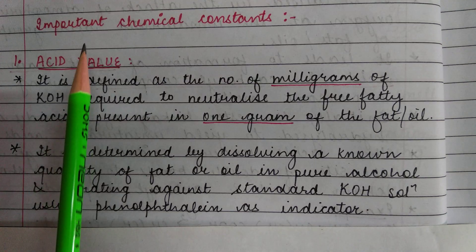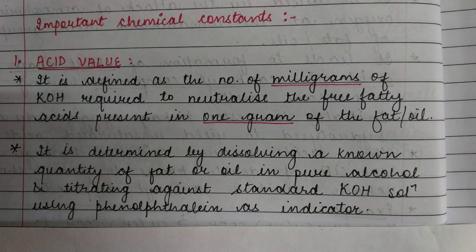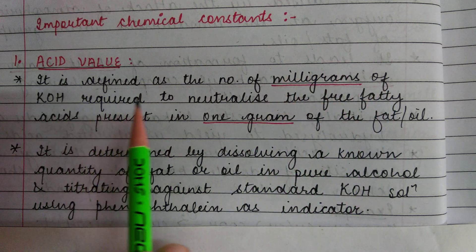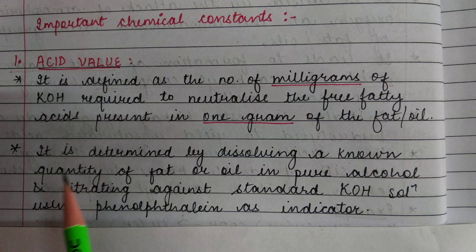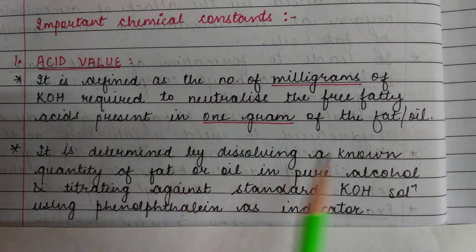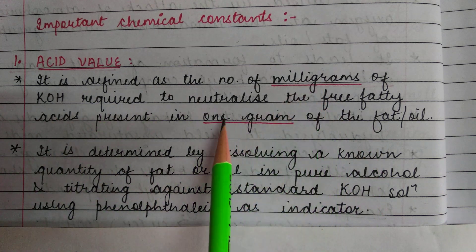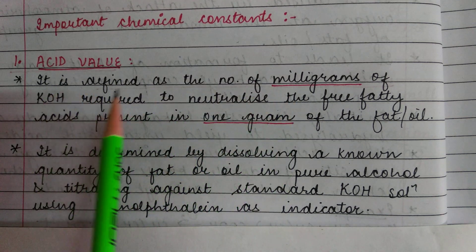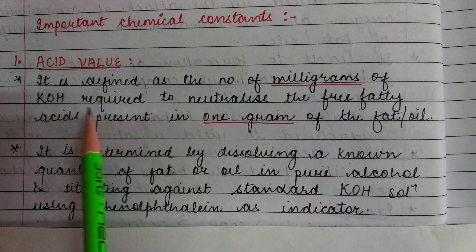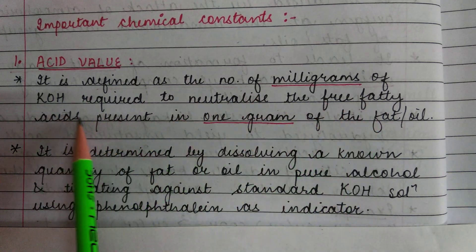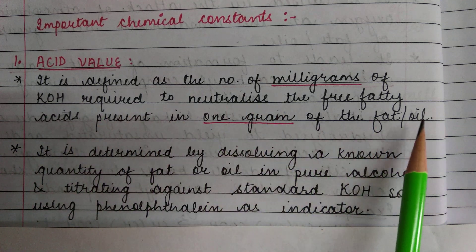Now we have important chemical constants. The first value is acid value. It is defined as the number of milligrams of KOH required to neutralize the free fatty acids present in 1 gram of fat or oil. We have to keep in mind the key terms: milligrams of KOH, and 1 gram of fat or oil.